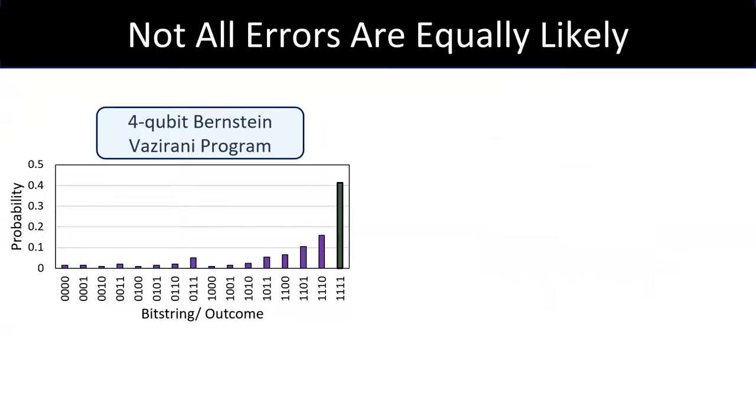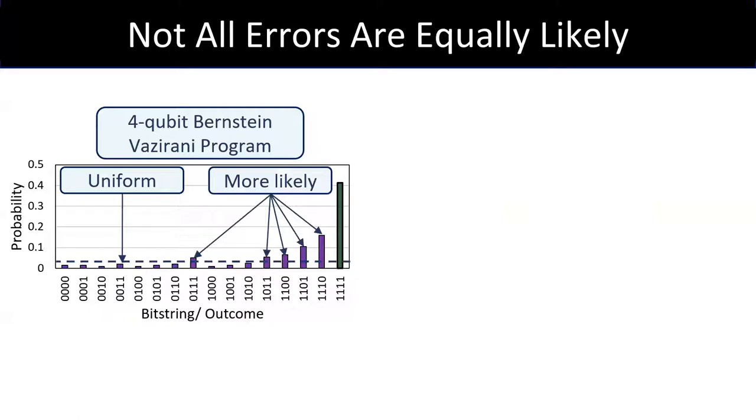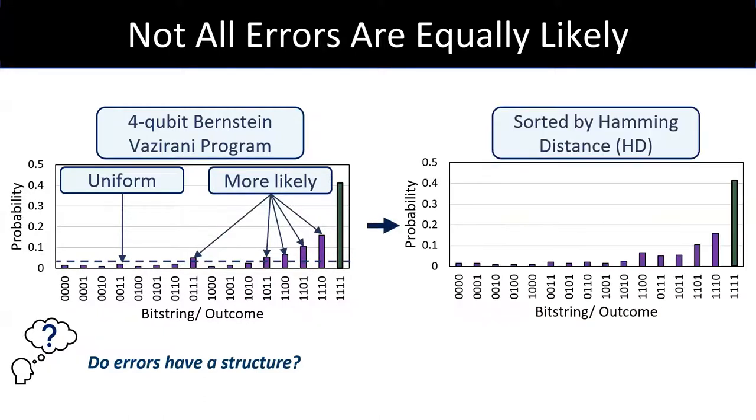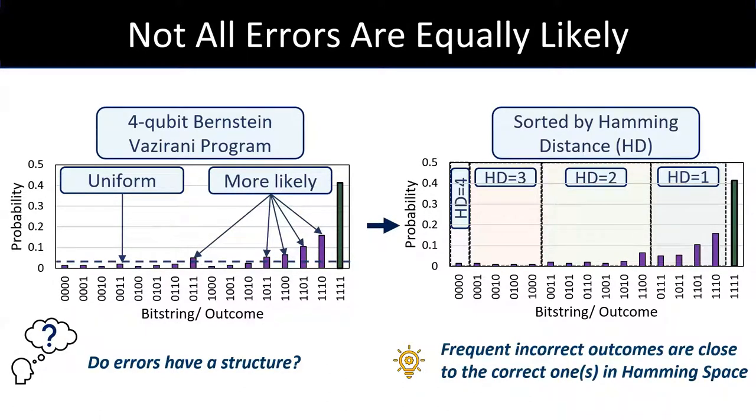let's take a look at the output of a 4-qubit Bernstein-Vazarani program. We observe that in addition to correct secret key, which is 111, a lot of incorrect outcomes are produced. However, we observe that these errors are not really occurring with uniform probability. In fact, if they were, they would all appear with the probability corresponding to the horizontal line shown here. Instead, many of these outcomes are way more likely than others. So we ask this question, do errors have a structure? To understand this, we sort these outcomes based on their Hamming distance with respect to the correct outcome. And we observe that incorrect outcomes that are close in Hamming space are significantly more likely than others.